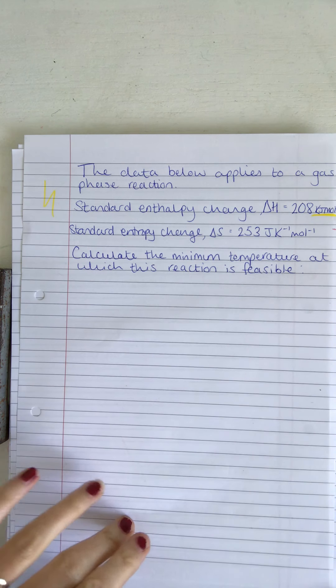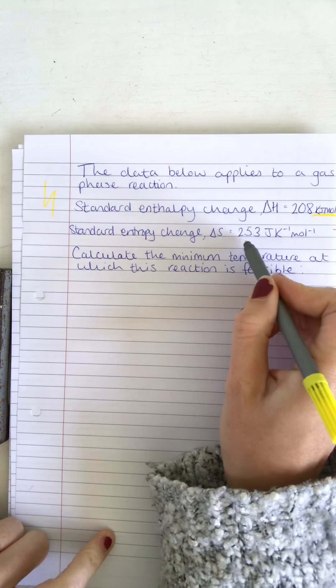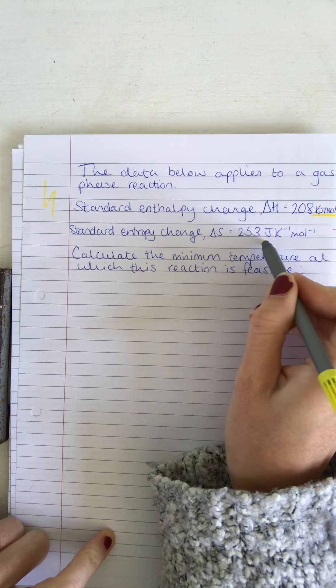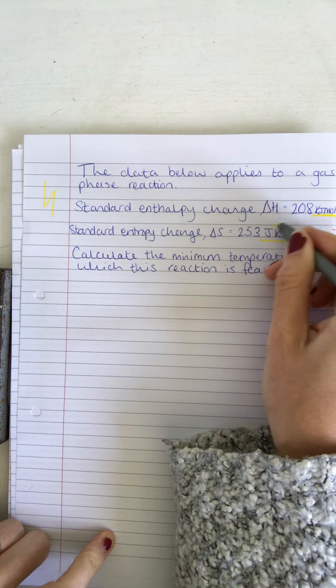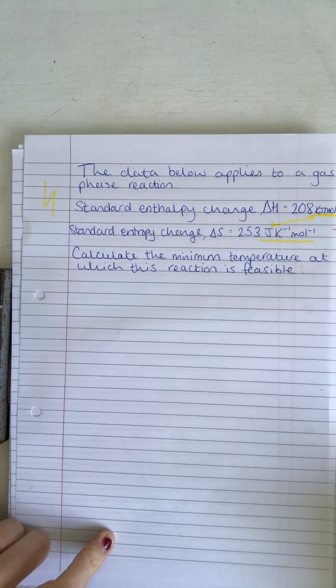Standard entropy change is 253 joules per Kelvin per mole. So I can see immediately I'm working in kilojoules for one value and joules for another, and so I know I'm going to need to do something at some point.